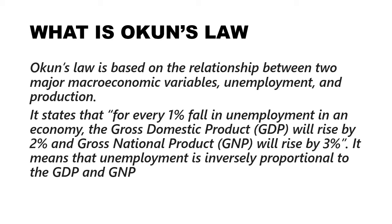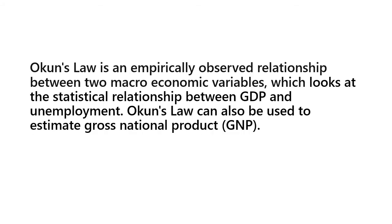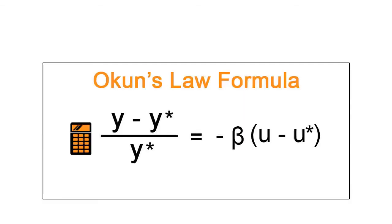Okun's Law is also known as an empirically observed relationship between two variables, which is why it is also known as a rule of thumb. It is often recognized by economists as a rule of thumb because it is based on an empirically observed relationship.